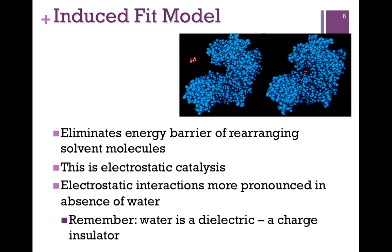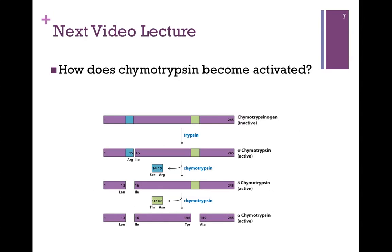So in all of these ways, enzymes help to facilitate reactions. They always lower the energy of the transition state, but they also position and orient the substrate so that the reaction occurs, and many times eliminate other substances that might interfere. In our next and last video lecture on Chapter 6, we want to see how chymotrypsin becomes activated.